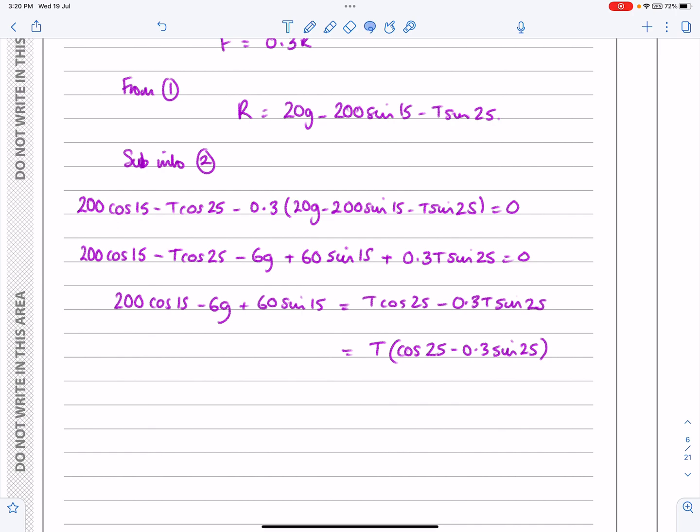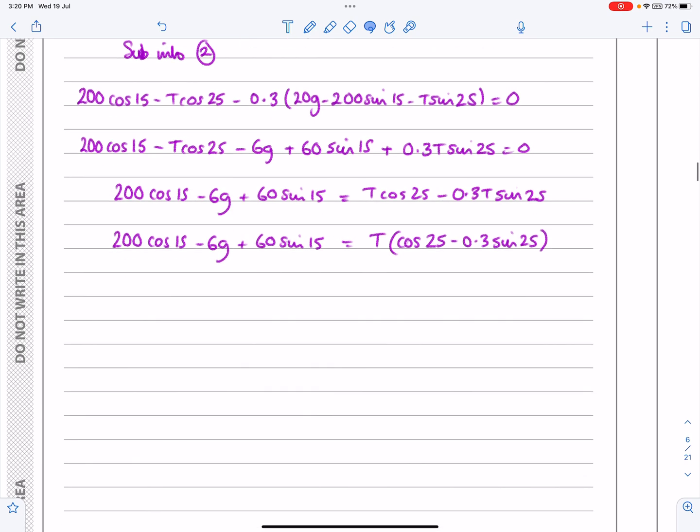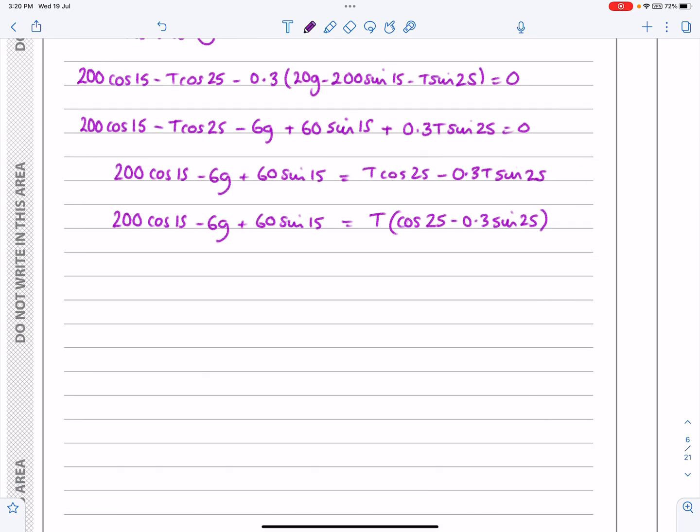that bit's equal to what we had before I'm just going to use my iPad to do that sorry but it just saves me a bit of time and so T then works out to be that value all divided by so 200 cos 15 minus 6G plus 60 sine 15